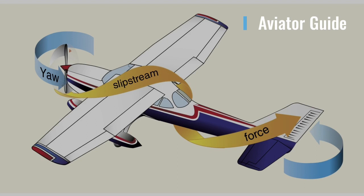The corkscrew flow of the slipstream also causes a rolling moment along the longitudinal axis. Note that this rolling moment caused by the corkscrew flow of the slipstream is to the right, while the rolling moment caused by torque reaction is to the left — in effect, one may counteract the other. However, these forces vary greatly, and it is the pilot's responsibility to apply proper corrective action using flight controls at all times. These forces must be counteracted regardless of which is most prominent.